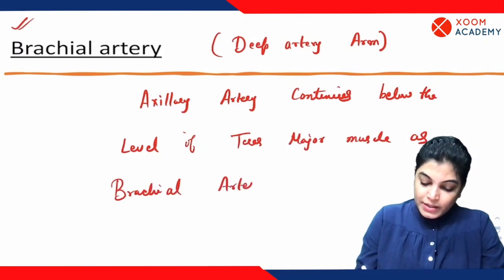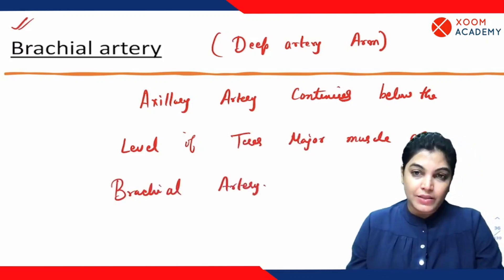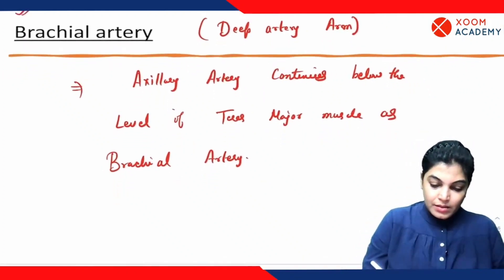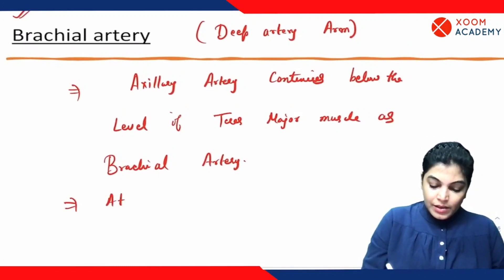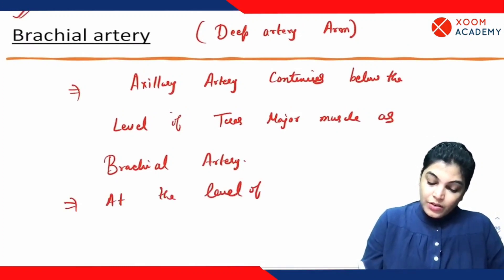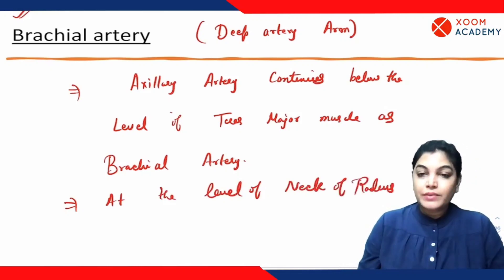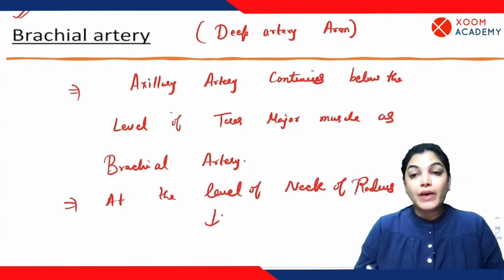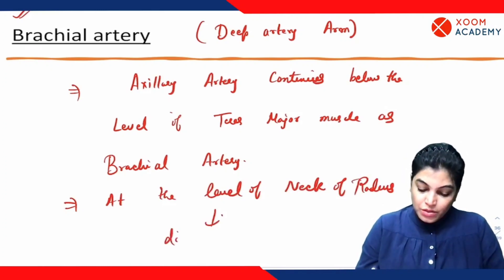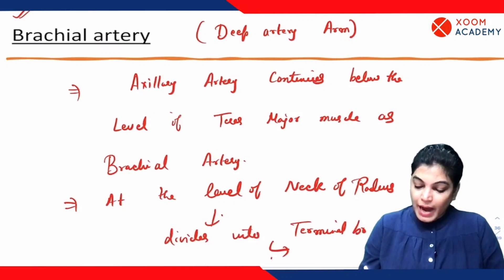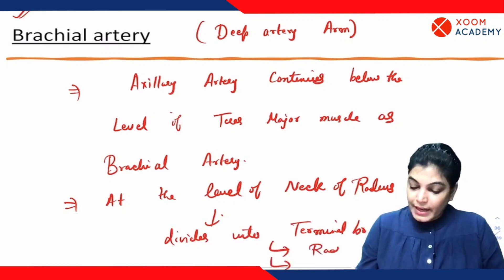The brachial artery ends exactly at the level of the neck of radius, where it divides into two terminal branches: the radial artery and the ulnar artery.